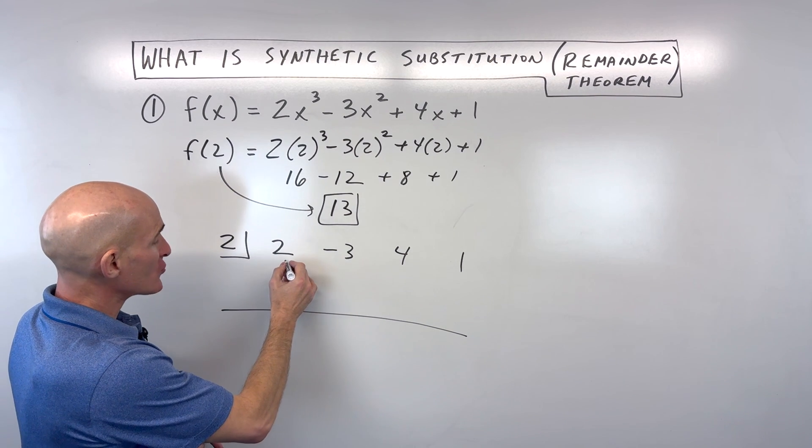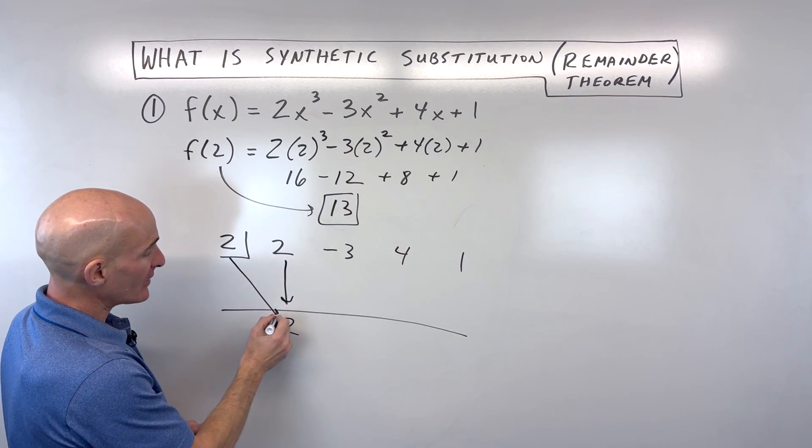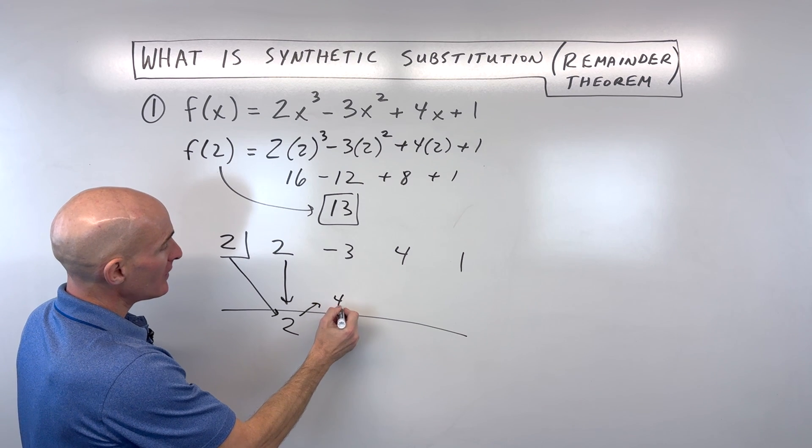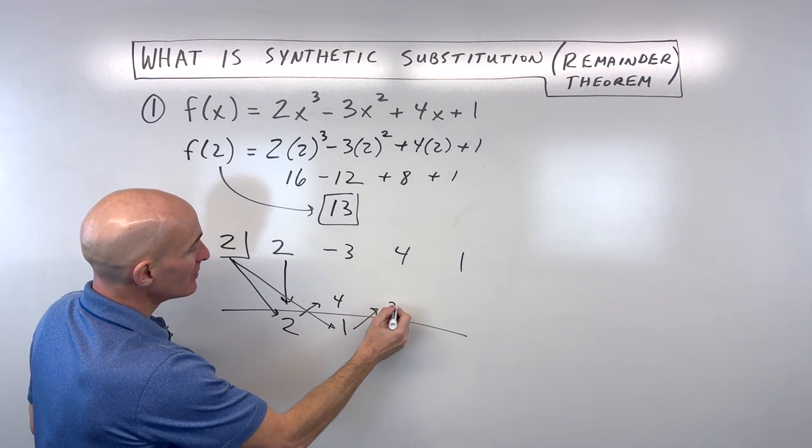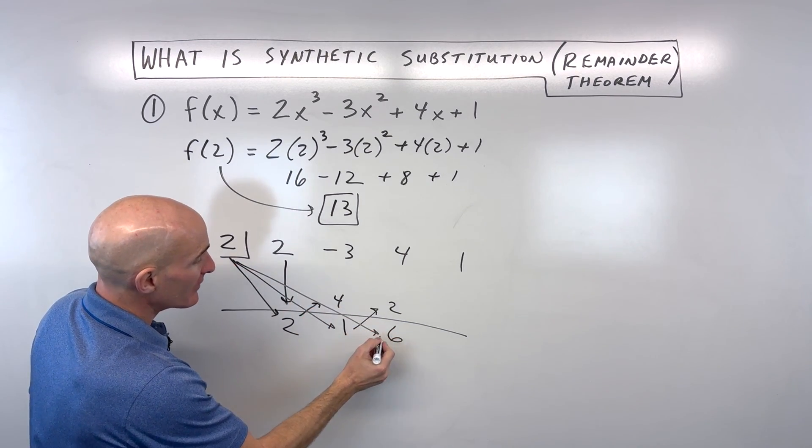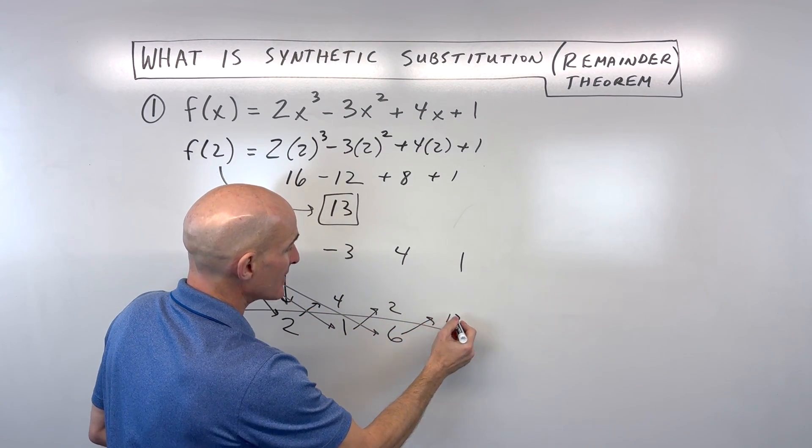Then what you do is you drop down that first number. You multiply on the diagonal. So 2 times 2 is 4. And then you add straight down. Multiply on the diagonal. Add straight down. Multiply on the diagonal. Add straight down.